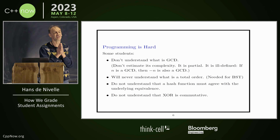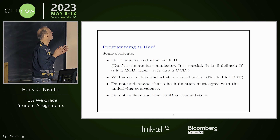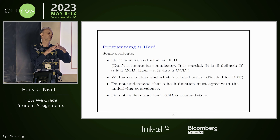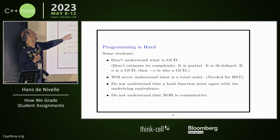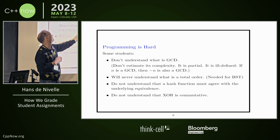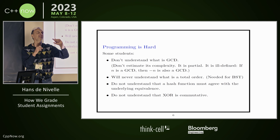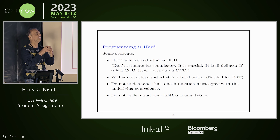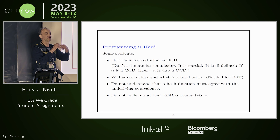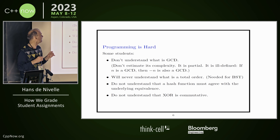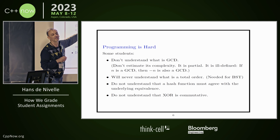Programming is surprisingly hard. Some students don't understand — for example, a GCD function, you think it's easy. Let's say ten percent of the students will probably never understand what GCD is. A GCD function is partial — zero, zero has no greatest common divisor, so it already has all the problems. And it's not well defined because if N is a GCD of two numbers, then minus N is also a GCD. A mathematician won't like this, but in computer science functions are often ill-defined. If you use GCD to simplify rationals, it must work independent of what the GCD returns. You must be generous in computer science. If you understand this, you're already ready for life as a programmer.